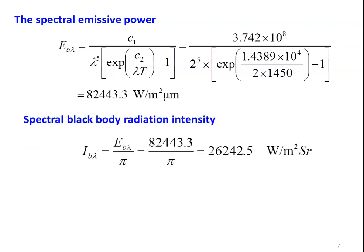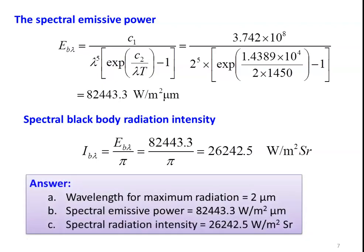The spectral black body radiation intensity: Iᵦλ = Eᵦλ / π = 82,443.3 / π = 26,242.5 watts per meter square steradian. Summary of answers: wavelength for maximum radiation is 2 micrometer, spectral emissive power is 82,443.3, and spectral radiation intensity is 26,242.5.